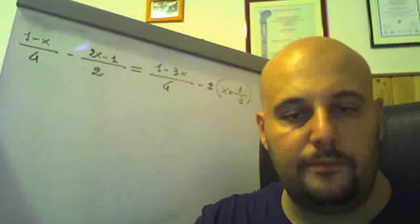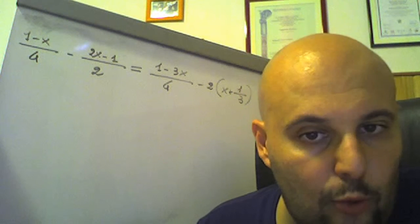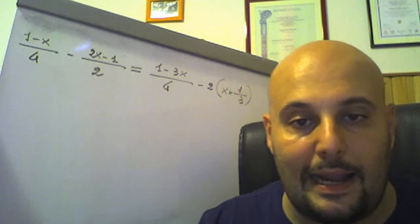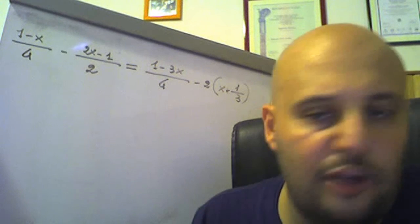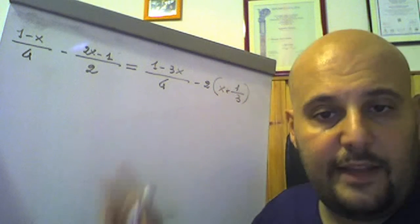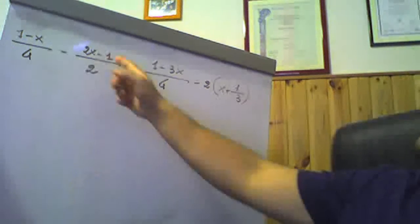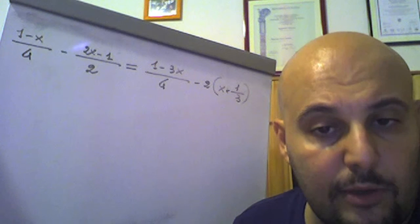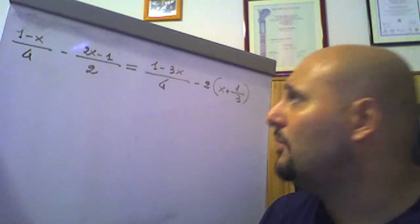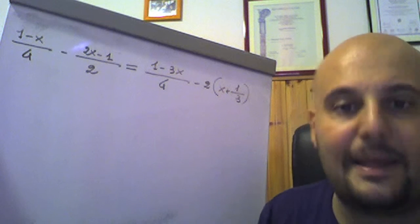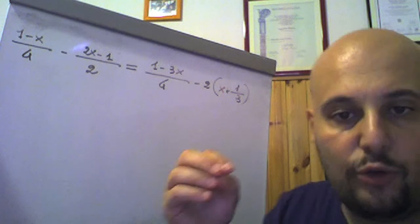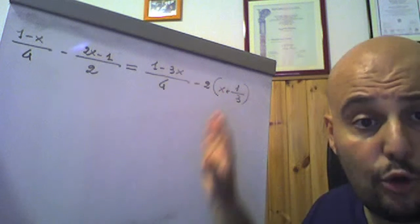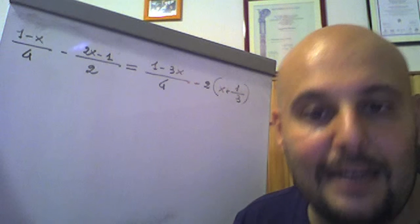As the last exercise of this video — after which we start a series of review videos on this topic with many exercises from this and other books on linear integer equations with numerical coefficients, with varying difficulty — we want to show this exercise: (1 − x)/4 − (2x − 1)/2 = (1 − 3x)/4 − 2(x + 1/3). Note: the equation is still integer, because unknowns are only at the numerator. It is not a fratta equation. But pay attention to fractional coefficients.